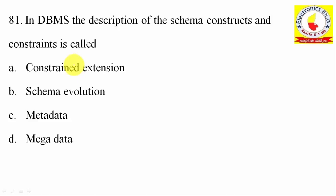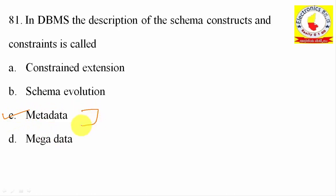81st question: In a database management system, the description of schema constructs and constraints is called — Constraint extension, schema evaluation, metadata, or mega data? The answer is metadata. Option C is correct.